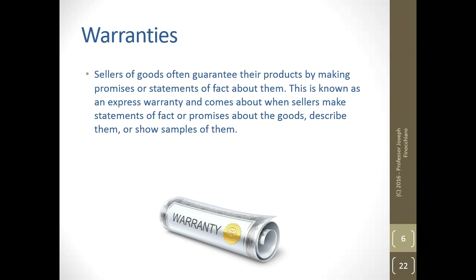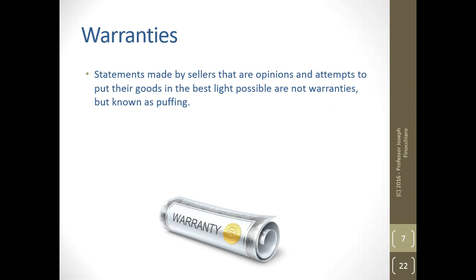Warranty: sellers of goods often guarantee their products by making promises or statements of fact about them. This is known as an express warranty — it comes about when sellers make statements of fact or promises about the goods, describe them, or show samples of them. Statements made by sellers that are opinions and attempts to put their goods in the best possible light are not warranties, but known legally as puffing. You have to be able to distinguish between a warranty and salesman puffery — not a bold-faced lie, but something painted to look better than it actually is.